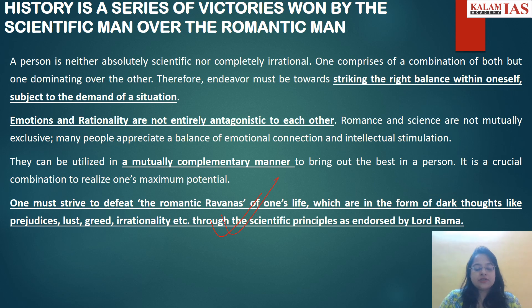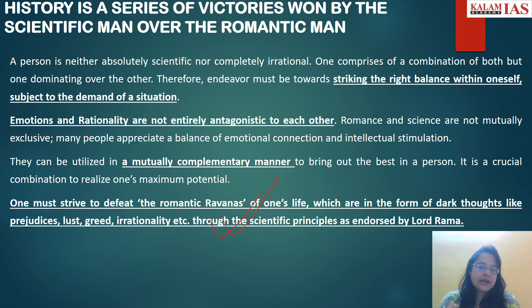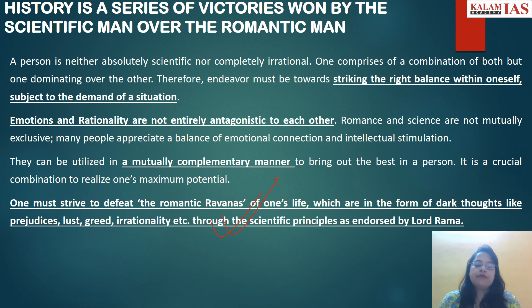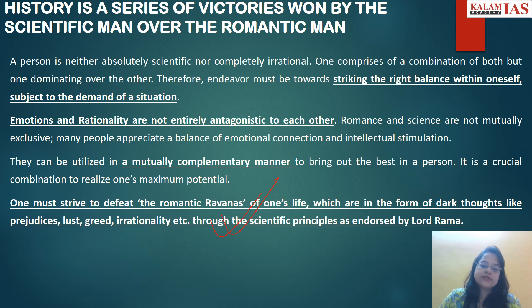Then you refer back to the introduction — a very, very important aspect of the conclusion. We had given the anecdote of Lord Rama and Ravana, so here we would write that one must strive to defeat the romantic Ravanas of one's life — which are in the form of dark thoughts like prejudices, lust, greed, and irrationality — through the scientific principles as endorsed by Lord Rama. This is how you give reference to the introduction again.